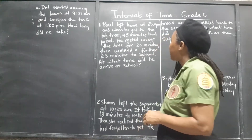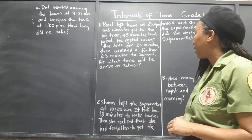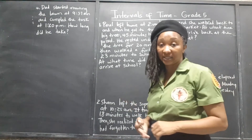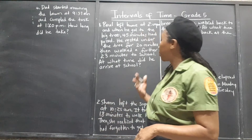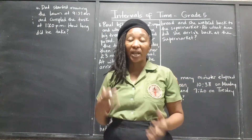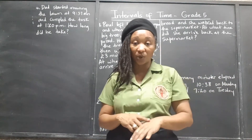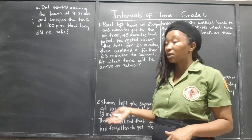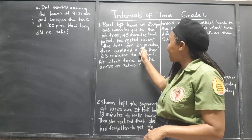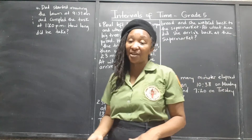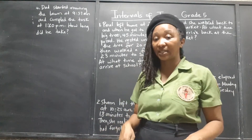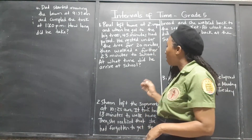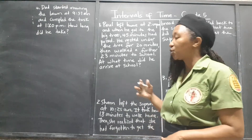So let's see. Paul left home at 2 PM, and when he got to the big tree, 45 minutes had passed. He left home at 2 in the afternoon; when he got to the big tree and looked at his watch, he realized 45 minutes had gone. So it took him 45 minutes from home to the big tree. He rested under the tree.